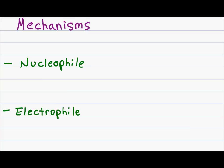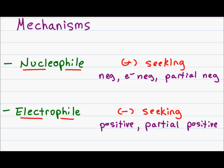Before we look at electron pushing arrows in mechanisms we have to define two important terms: nucleophile and electrophile. Nucleophile sounds like nucleus loving and describes a molecule that is positive seeking. Electrophile contains the words electron loving and defines a molecule that is negative seeking. A molecule that is positive seeking will usually be negative, highly electronegative, or partially negative. Examples include a molecule ending in RO- such as the carboxylate anion, the partially negative oxygen in a water molecule, or the lone pair of electrons on a nitrogen atom.